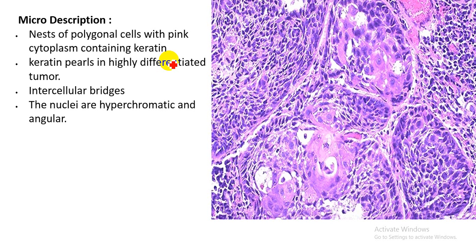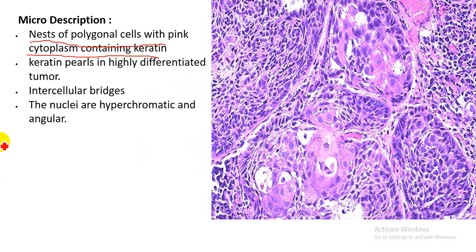Now let's describe the microscopic features of squamous cell carcinoma. Nests of polygonal cells with pink eosinophilic cytoplasm can be seen, and the cytoplasm contains abundant keratin. In the highly differentiated form, keratin pearls can be seen along with the nest of tumor cells. You can also see intercellular bridges, which is an interesting feature. The two most important microscopic features are keratin pearls and intercellular bridges, also seen in well-differentiated squamous cell carcinoma of the cervix and skin. The nuclei are hyperchromatic and angular.